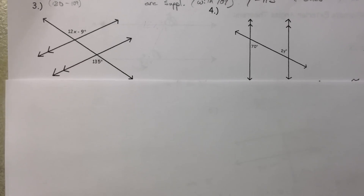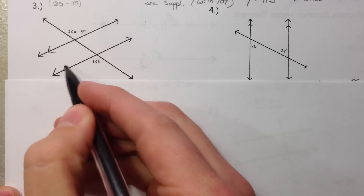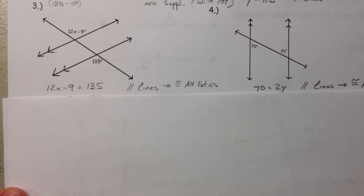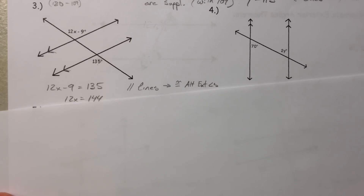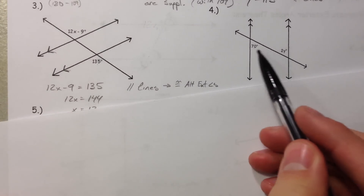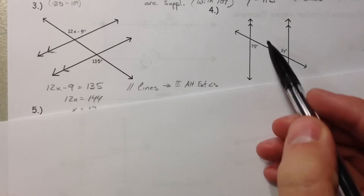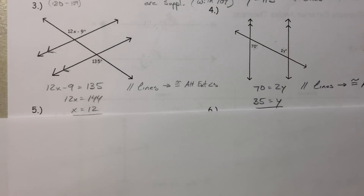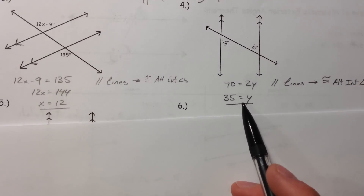Analyzing the next picture: these angles are alternate exterior angles, so if these lines are parallel, those must be congruent. Set the expressions equal to each other — parallel lines, congruent alternate exterior angles. Add 9, divide by 12, and you get 12. Next, very similar but with alternate interior angles — angles alternating sides of the transversal on the inside. Set them equal, and 35 equals Y after you divide by 2.